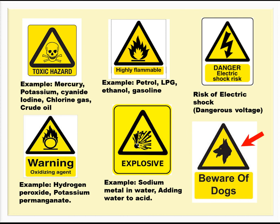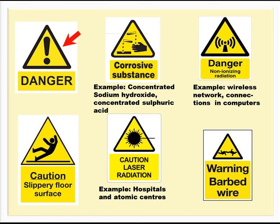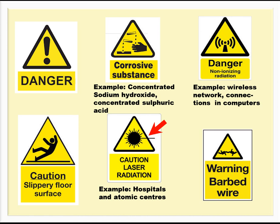More warning signs: Beware of dog. Danger – e.g., near a pit. Corrosive – e.g., Concentrated sodium hydroxide, concentrated sulfuric acid. Non-ionizing radiation – e.g., wireless network connection in computers. Slippery floor. Laser radiation – e.g., hospitals and atomic centers. Barbed wire. Fire.